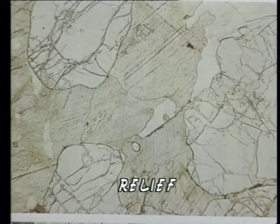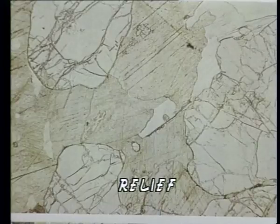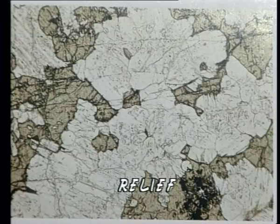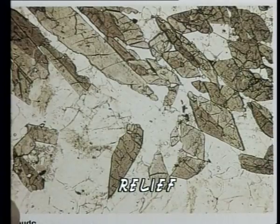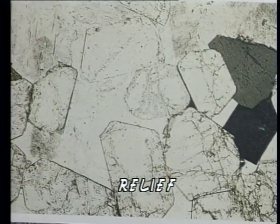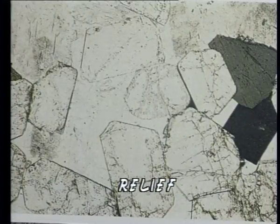In thin section, we normally come across several grains of either the same mineral or different minerals. Some minerals appear to have more distinct grain boundaries than others. The distinction of grain boundary is measured as relief of a mineral. Relief is proportional to contrast in refractive index between a particular mineral grain and those surrounding it. When there is a greater contrast in refractive index, the grain boundary is distinct and the mineral is said to have a high relief.